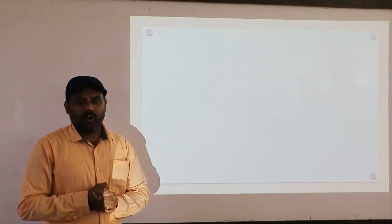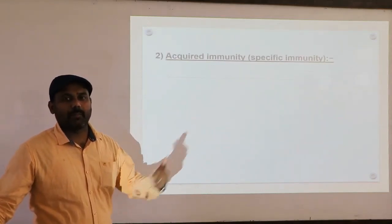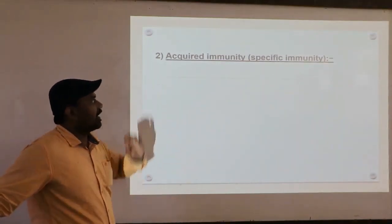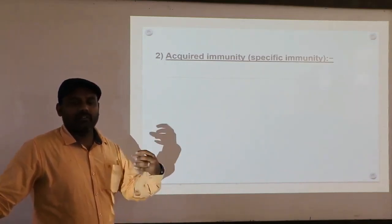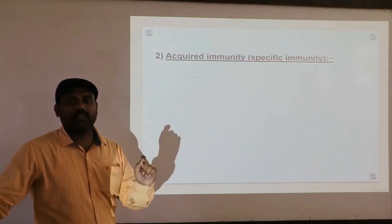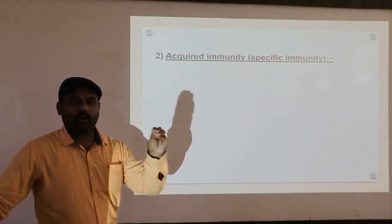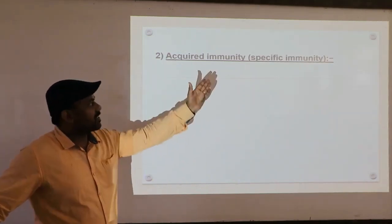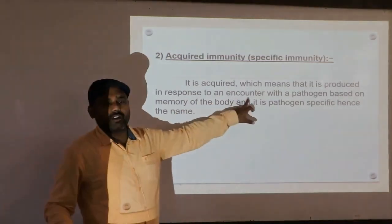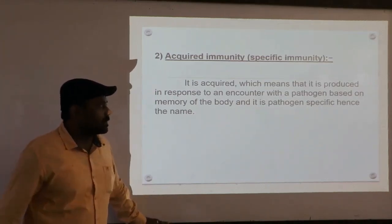Hello students. In our last class we were discussing about immunity. Quickly we'll revise those previous slides on acquired immunity or specific immunity. Acquired immunity means we develop this immunity only after birth. It is called specific immunity because it is specific in its action — it prevents the entry of a microbe, microorganism, or pathogen into the body. It is produced in response to an encounter with the pathogen, based on the memory of the immune system.